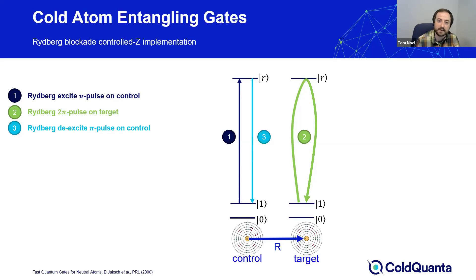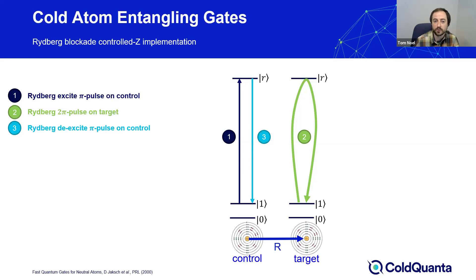Now we get to one way of implementing an entangling gate using Rydberg blockade. In this protocol, we have a sequence of three pulses: a Rydberg excitation π-pulse on the control atom, then a 2π-pulse on the target atom, and finally a de-exciting π-pulse on the control atom.